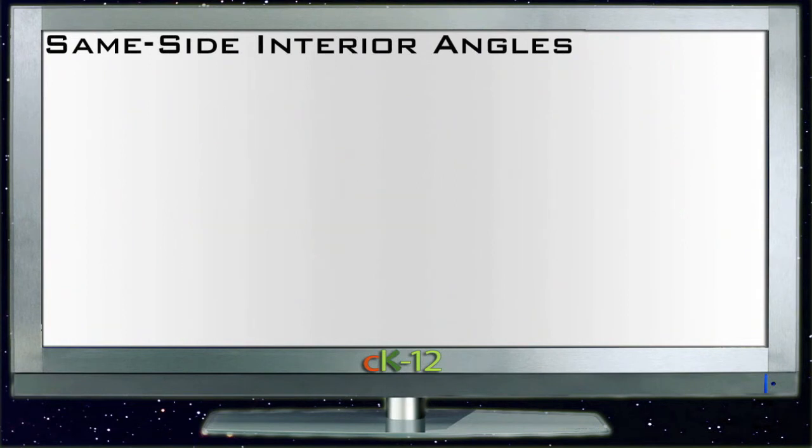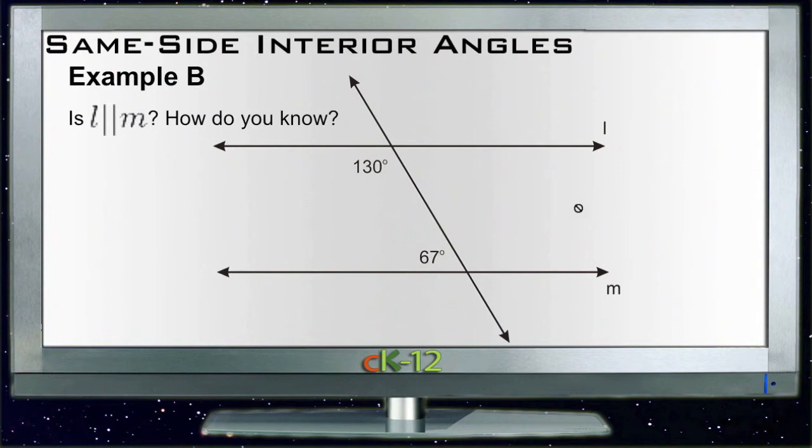Let's take a look at Example B. Example B says, is L parallel to M and then asks us how we know. So is L parallel to M? Well, if L is parallel to M, then we can use our same-side interior angles to tell us that these two angles here must equal 180 degrees.